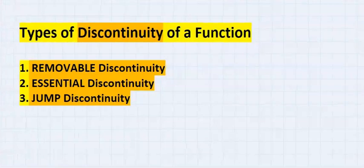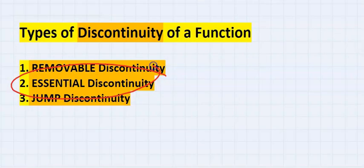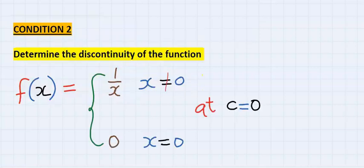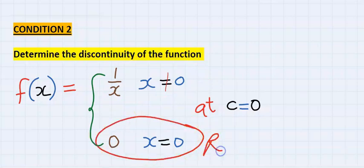Next, let's consider condition two, which is essential. Let's consider this example. The upper part is known as left hand limit, while the lower part is known as right hand limit.